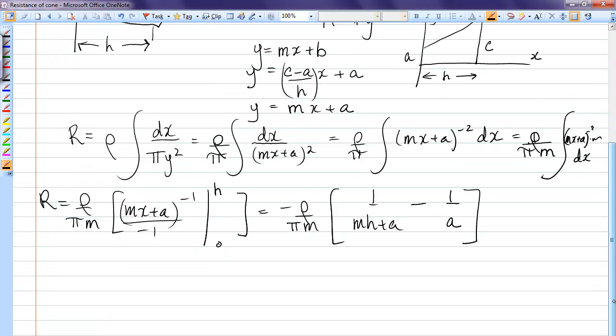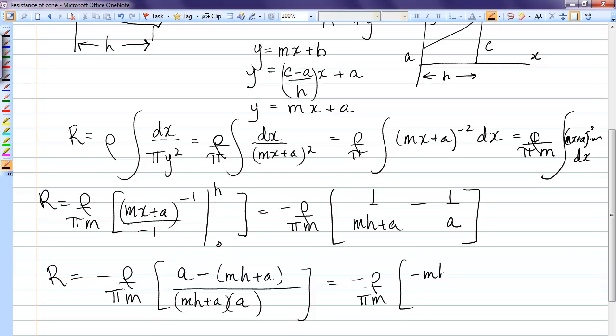Now I'm going to take that to a common denominator. Technically that could be the answer, but if you want to make it look a lot better, take it to a common denominator, and you'll see a lot of things will cancel. So we have [a - (mh + a)] all over the product of (mh + a) times a. So on the top we're going to have negative mh, the a's are gone, and we still have the a(mh + a). The negative signs are gone, the m's are gone, so now I've got ρh over π times 1 over a times (mh + a).